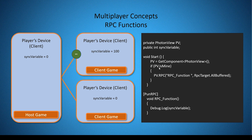The next step is to call your RPC function. Most of the time you only want to call an RPC function from an object owned by the local player. So here I've included an if statement where I check to see if PV.isMine is true, which checks whether the current PhotonView is owned by the local player.